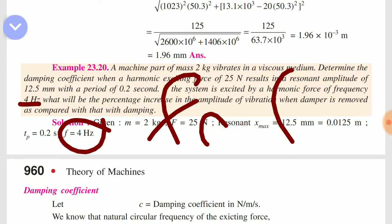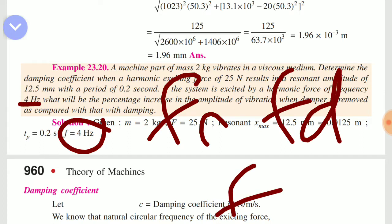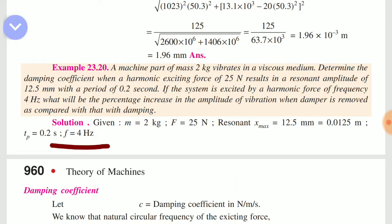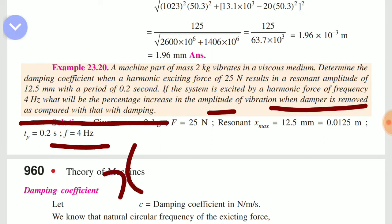f_n is natural frequency, f_d is damped frequency, f is forced frequency. What will be the percentage increase in amplitude of vibration when the damper is removed as compared to that with damping? If the damping coefficient is removed, we will have to solve for the damping coefficient first.